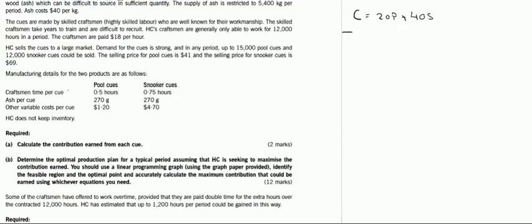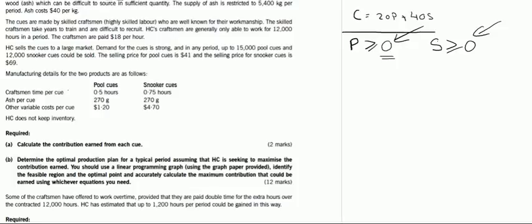Let us look at the constraints. In any linear programming question, exam questions will pertain to number of units, how many units to produce, shadow price, maximum profit, and minimum cost. The production of units cannot be negative, so even if not stated, you will have two non-negativity constraints. A company cannot produce negative pool cues — it can produce zero or more, but not negative one, negative two, etc. Likewise, snooker cues cannot be negative.